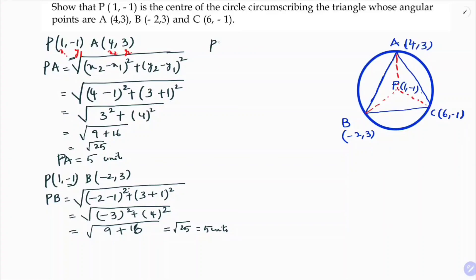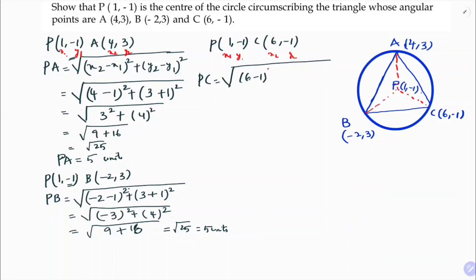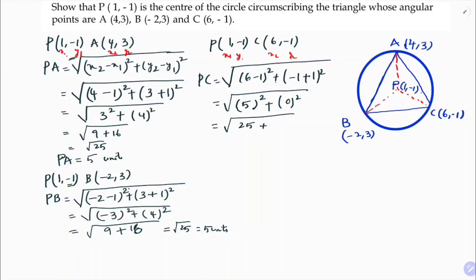Now I'll find PC. P is (1, -1) and C is (6, -1). PC = √[(6 - 1)² + (-1 - (-1))²] = √[5² + 0²] = √[25 + 0] = √25 = 5 units.